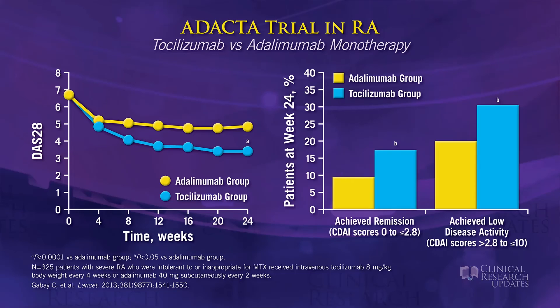TNF blockers generally work better in combination with methotrexate — is the same true for tocilizumab? Tocilizumab does work better in combination with methotrexate, though several studies have given mixed results. What we can say definitively is that the combination works very well, and tocilizumab monotherapy can work in more patients than TNF monotherapy. The Adacta trial compared tocilizumab versus adalimumab as monotherapy — since adalimumab works much better in combination, the result was not surprising: tocilizumab was superior, and sub-analysis using the CDAI, which excludes CRP, showed exactly the same result.